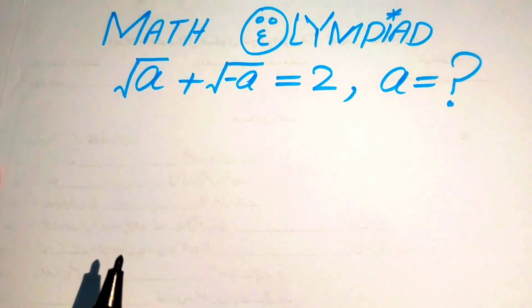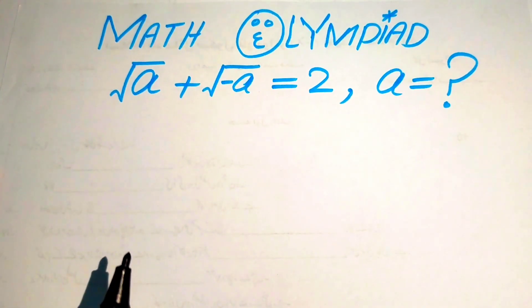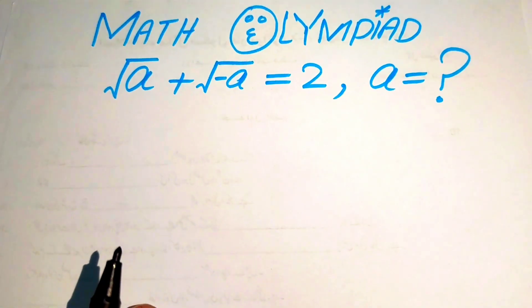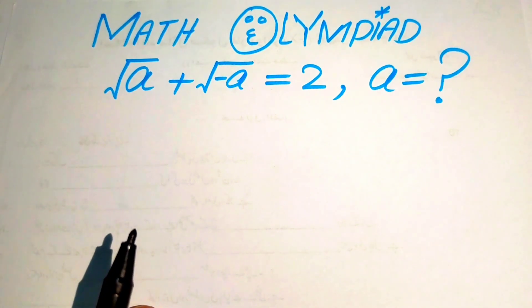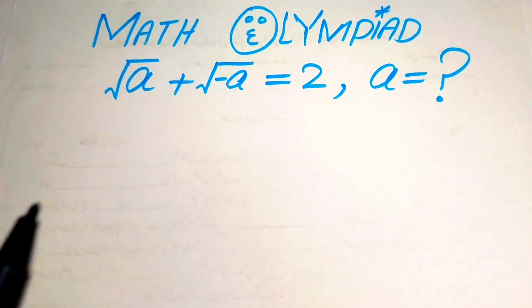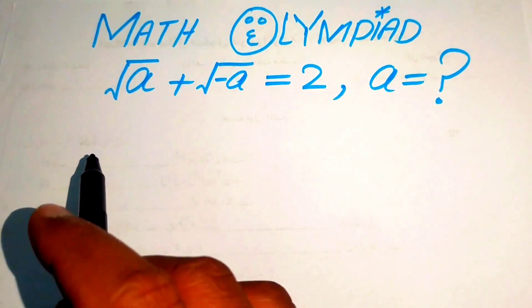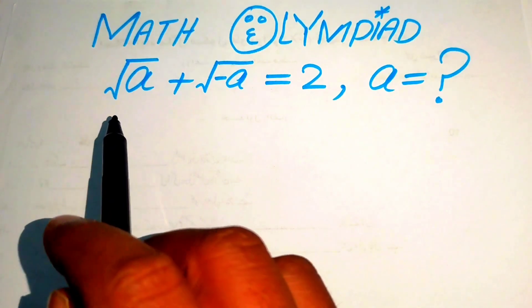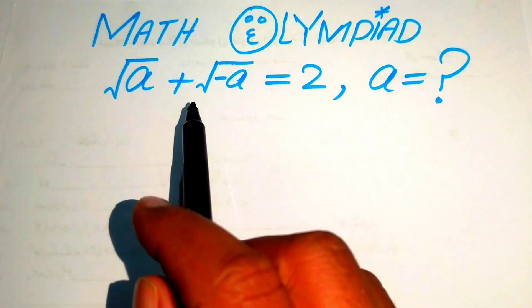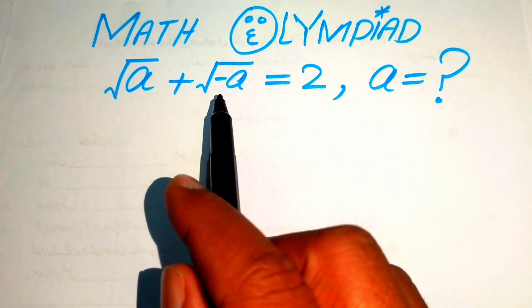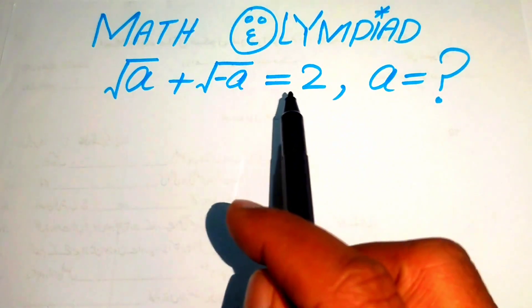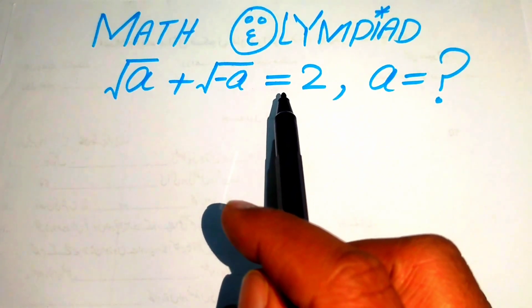Hello everyone, welcome back to the Map of Mathematics. In this video we are going to solve this nice math algebraic challenge: square root of a plus square root of minus a equals 2.